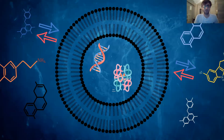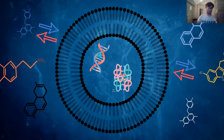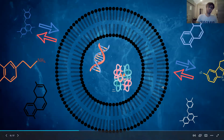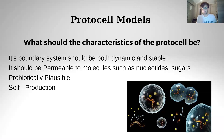Basically, we predict our model cell to look like this: inside the cell there is genetic material and metabolic machinery, there are energy transfers, transport of chemical molecules and ions, and there is a boundary system.